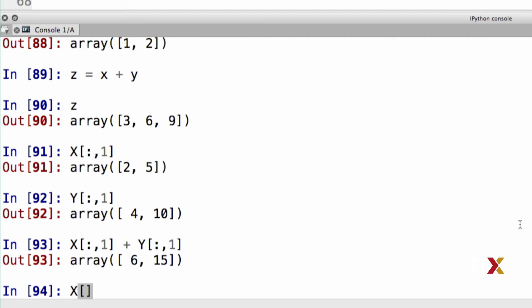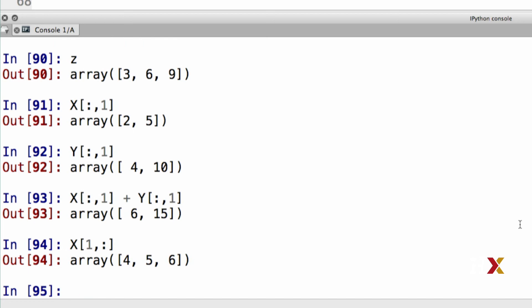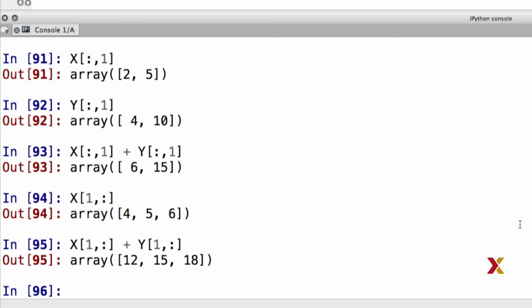To extract the first row of x, I type within square brackets 1 comma colon, which gives me all of the elements in the first row. In this case, these are numbers 4, 5, and 6. I can take also the first row of y, and I can then add these two arrays up.